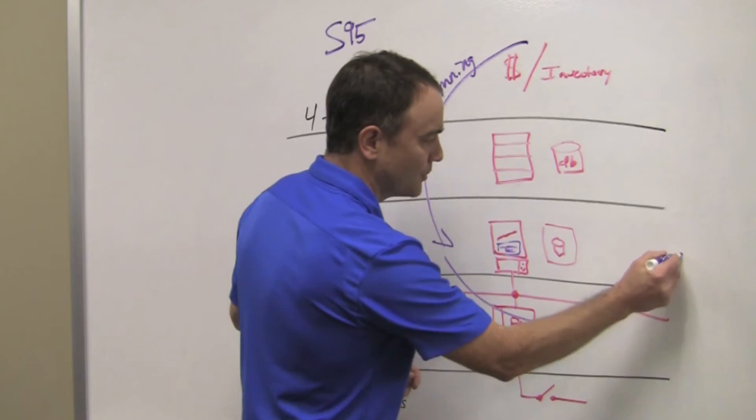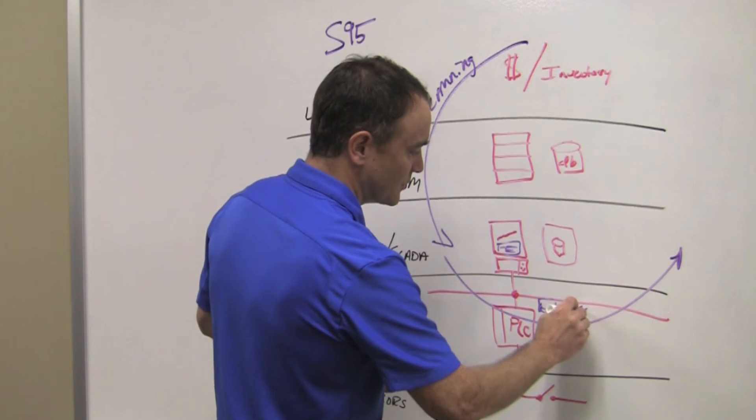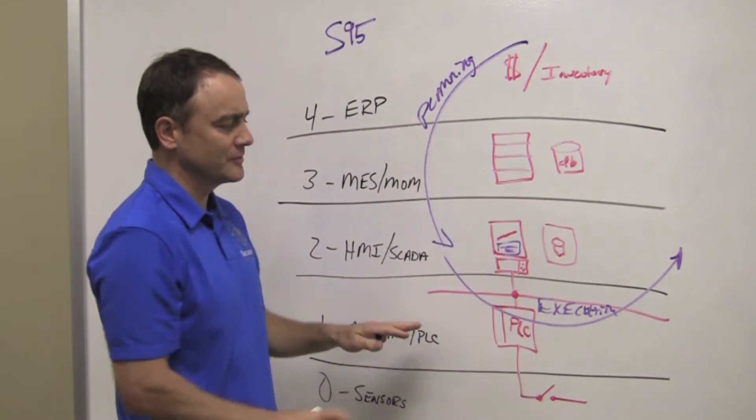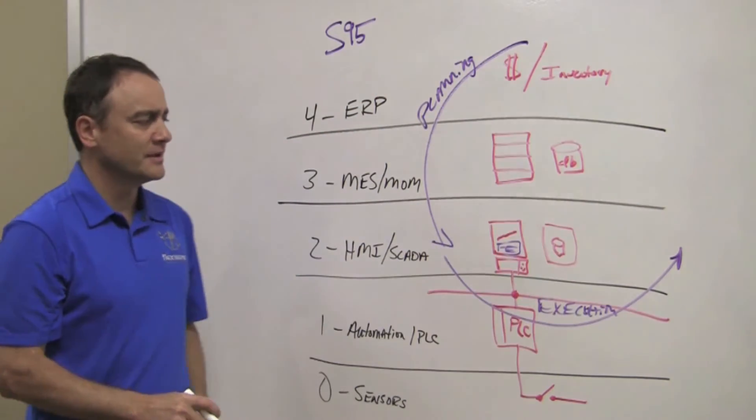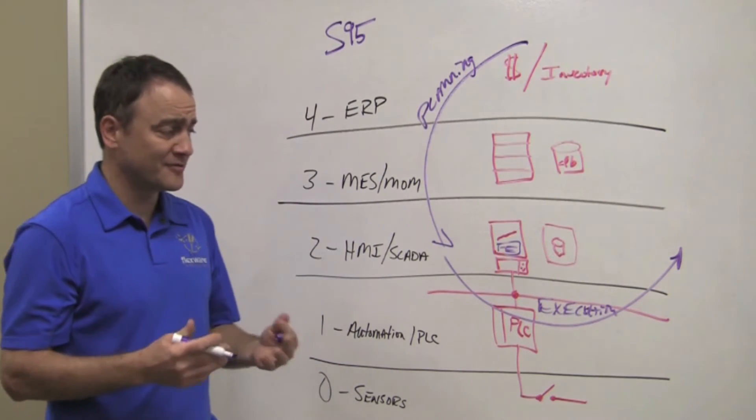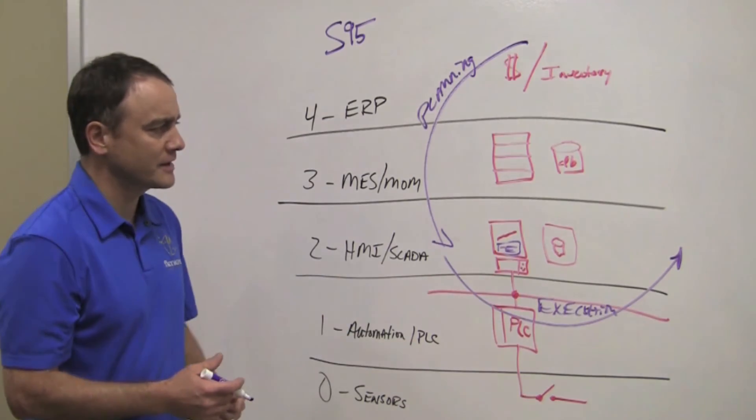We talk about an execution flow, which is kind of the next flow. And in execution, we're talking about information that's coming down out of these MES systems and ERP systems that tell us how to make the product that we're making. It might be work instructions, recipe parameters, different quality parameters and things like that that would allow us to make a good quality product.